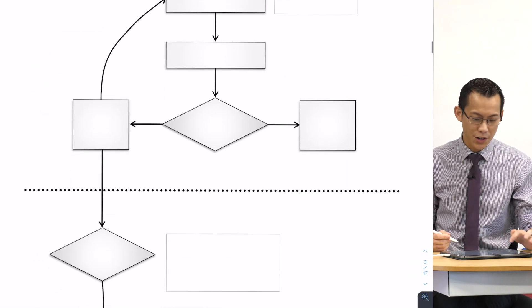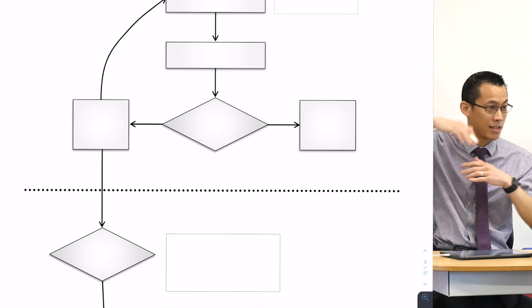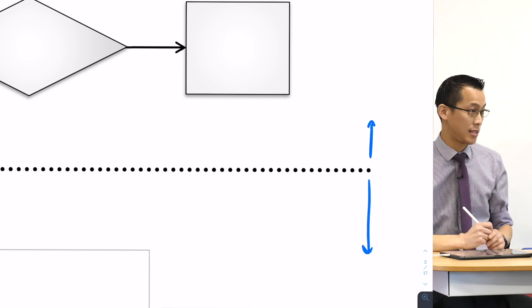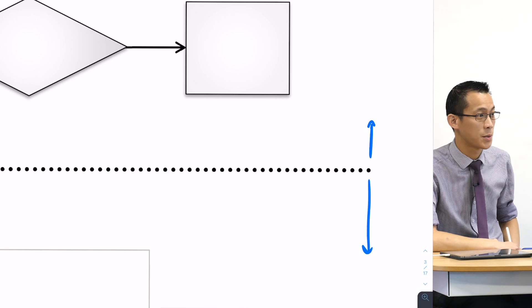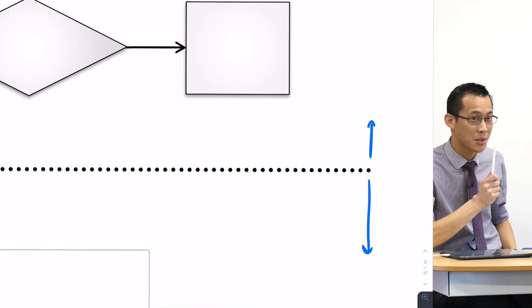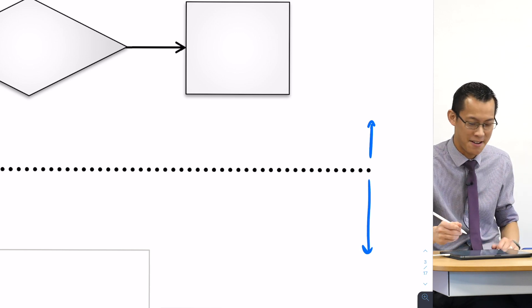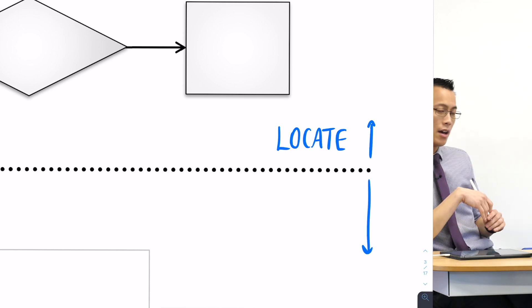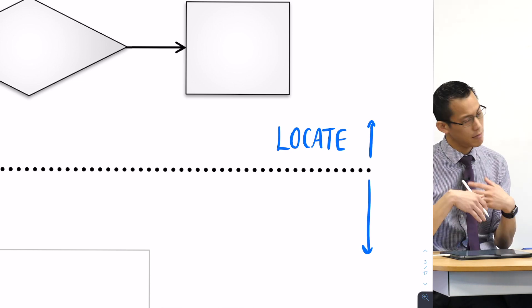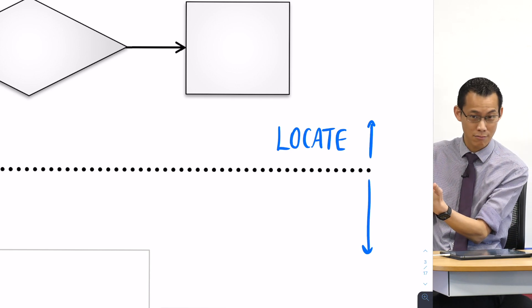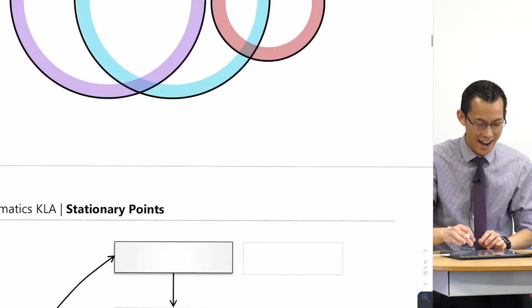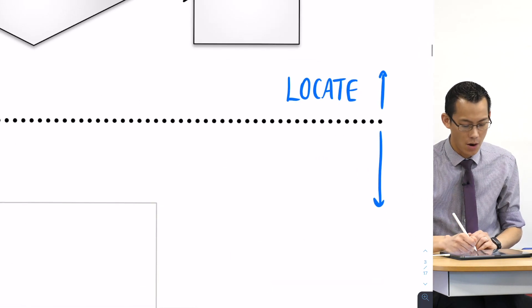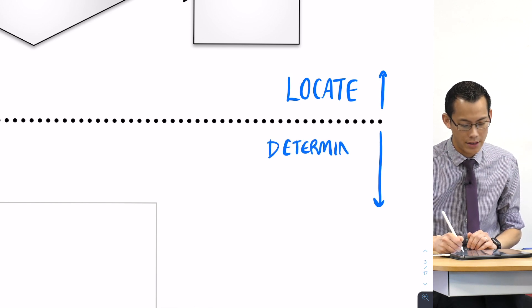I hope you notice that this gigantic flowchart is split into two sections above and below this fat dotted line. Those two sections correspond to those two questions that we ask about stationary points. What's the first thing we ask? Where are they? The word we use is locate. The top half is just about locating those stationary points. Then down below, if you find stationary points, you're gonna try and work out which one, which kind are they. We determine the nature.